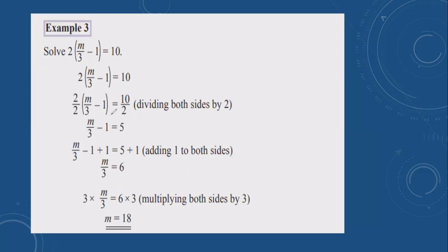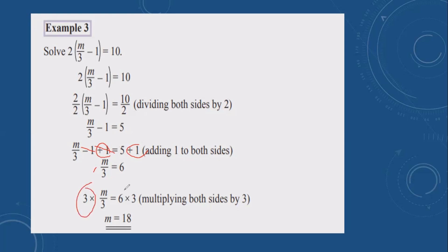Let's see this example. First, divide by 2 — the 2 cancels, giving n over 3 minus 1 equals 5. Remove minus 1 by doing plus 1 on both sides. These cancel. 5 plus 1 is 6, so n over 3 equals 6. Division — the opposite is multiplication. Multiply by 3, the 3s cancel. 6 times 3 is 18, so n equals 18.